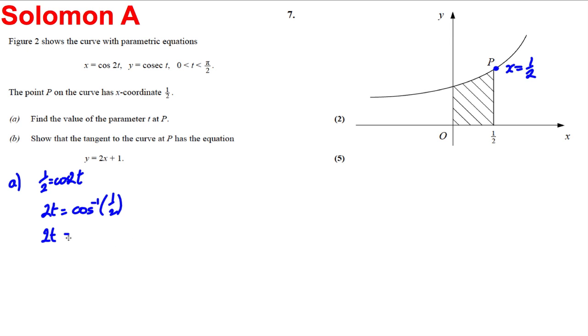So 2t is going to be equal to pi by 3. What other values could it equal? Let's just check what the cos graph looks like. If we're going between 0 and pi by 2, but we're doubling the angle, let's go between 0 and pi. The cos graph looks like this between 0 and pi. And pi by 3 is that value there. There's no other values. So t must be pi by 3 divided by 2, which is pi by 6. That's the t value, and we're done for the first part. So t is equal to pi by 6 when x is equal to a half.